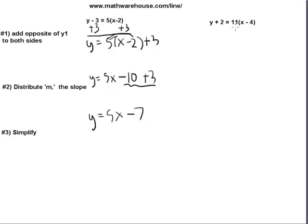Let's try this equation. y plus 2 equals 11 times x minus 4. You know the deal. Let's add the opposite of y1. Opposite of 2 is minus 2.